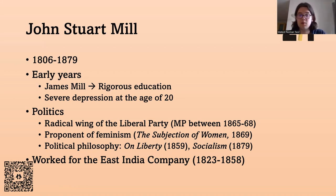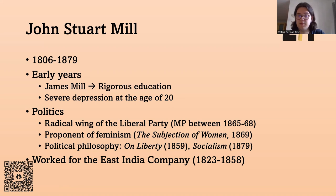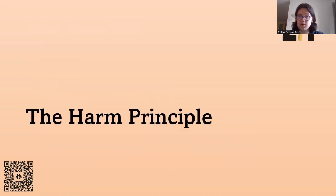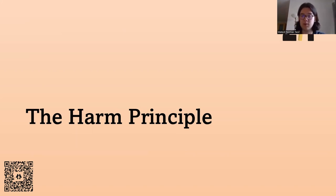On his political philosophy, there is one big work that we'll be discussing today: 'On Liberty,' published in 1859. But also other works such as his essay about Socialism and Liberalism, published in 1879. So without any further ado, we want to discuss what the harm principle is — what is Mill's basic political philosophy, how do we come to the problem of freedom of speech, and how does it interact with the larger philosophy that Mill proposes?